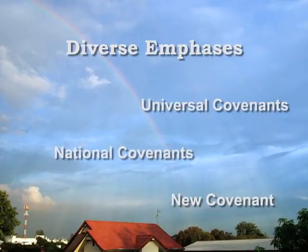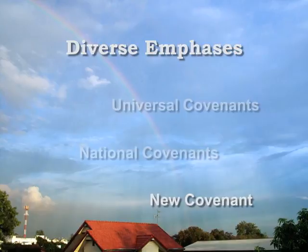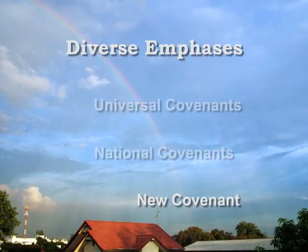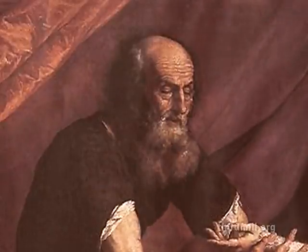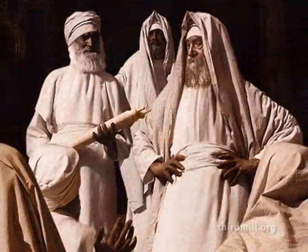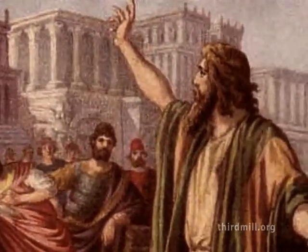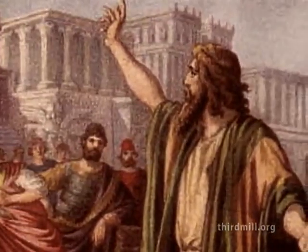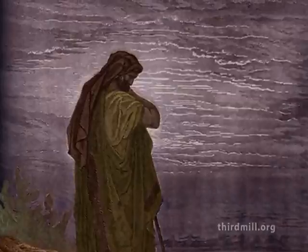With the emphasis of the universal and national covenants in mind, we should look at the new covenant — the last major covenant mentioned in the Old Testament. In the later history of the Old Testament, the prophets of Israel faced the time when Israel would go into exile. They spoke, however, of a covenant that would be established after the exile. At that time, Israel would repent of sin and God would bring history to its final climactic stage. And along with these blessings, the prophets said that God would make a final covenant with his people.